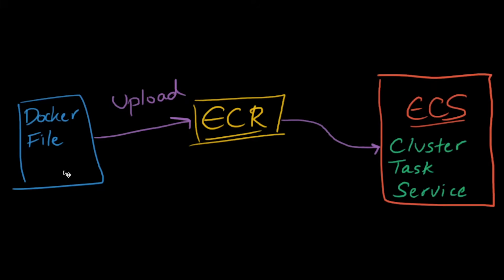Once we do that, we're going to build that Dockerfile, we're going to create a repository in ECR, and then we're going to upload that Docker image to ECR. After that we're going to go ahead and set up ECS. Now there are three main components: a cluster, a task, and a service.